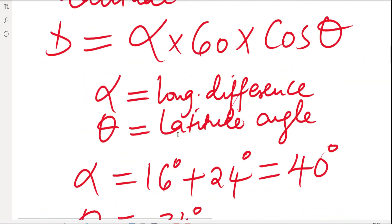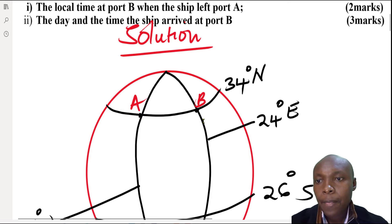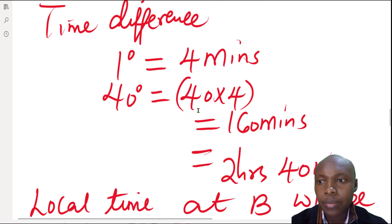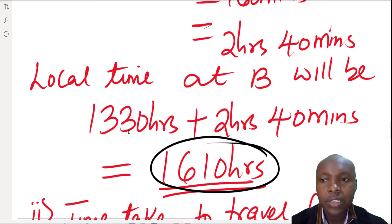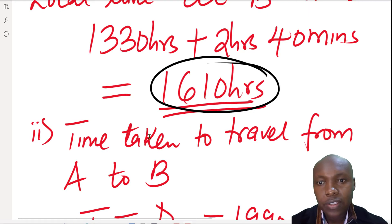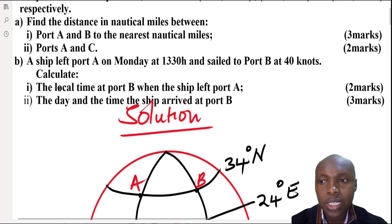We need to identify which place is ahead in time. B is to the east, and places to the east are always ahead of time. So B is ahead of A. The local time at A is 13:30 hours; adding 2 hours 40 minutes gives the local time at B as 16:10 hours when the ship left port A.